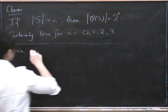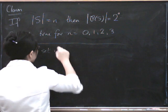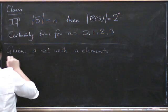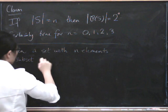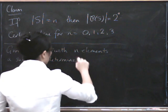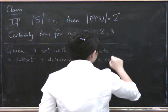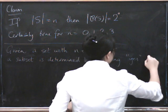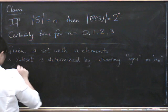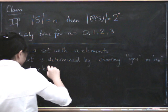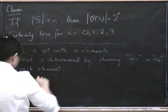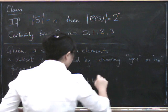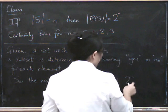So given a set with n elements, a subset is determined by choosing yes or no for each element. So the number of possibilities is 2 to the power of n because there's one choice for each element.